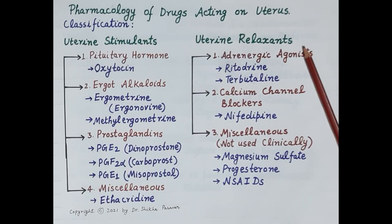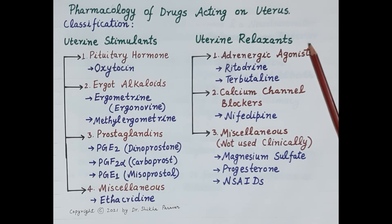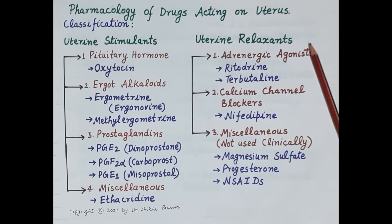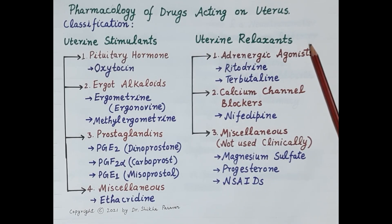Uterine relaxants or tocolytics are associated with complications in both the mother and fetus, and therefore their administration requires continuous monitoring of the pregnant woman as well as the fetus. No satisfactory tocolytic is available as yet, and some tocolytics are not FDA approved and are used off-label for postponing delivery.